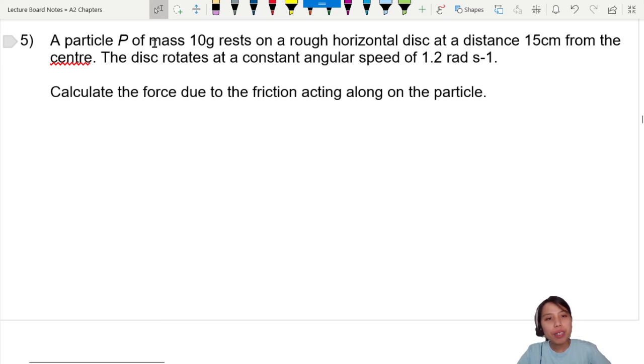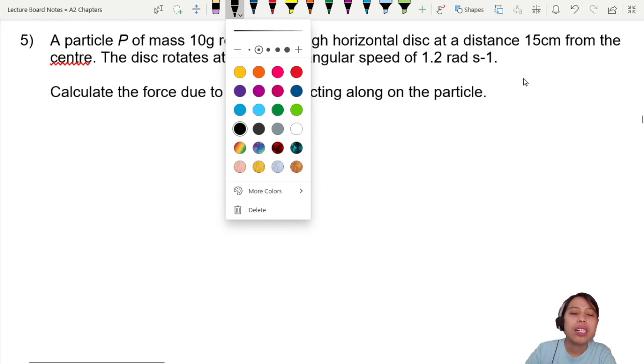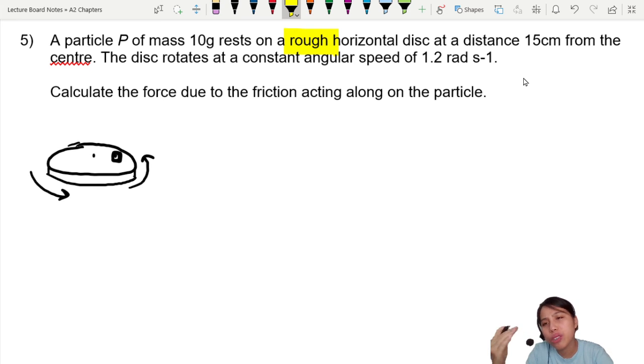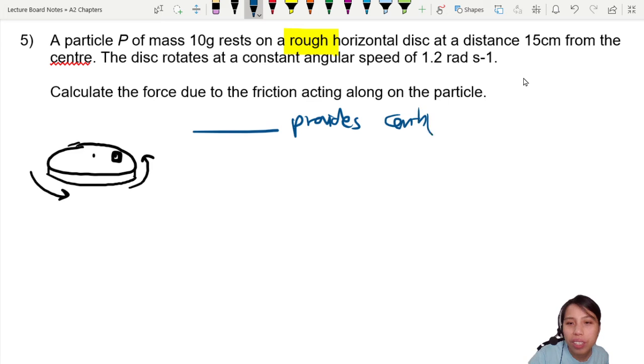Last one for today. A particle P of mass 10 grams, very light, rests on a rough horizontal disk. How to imagine? If I want to draw a 3D diagram, it kind of looks like this. Imagine a CD, certain thickness, like you know where you put your foot on the table and then the table can turn round and round. So there's a particle resting here, and then the center, and this all can rotate like that. So the particle will also rotate because it's sitting there. Now this one, note, it's a rough horizontal disk. So the first thing I see this question, I'll be asking you: who provides centripetal force? What force provides centripetal force? Got string tied? No tie string also. Rough disk, so got friction. So there will be some kind of frictional force that will allow this particle to move in a circle. Like that also can.